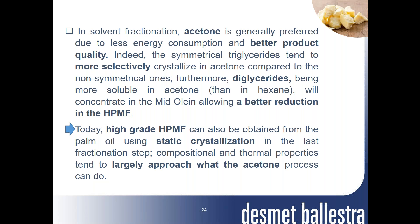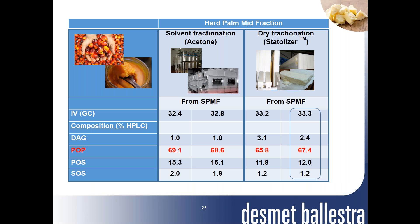In solvent fractionation, acetone is generally preferred due to lower energy consumption and better product quality. The symmetrical triglycerides tend to more selectively crystallize in acetone compared to non-symmetrical ones, and glycerides being more soluble in acetone will concentrate in the mid-olein, allowing a better reduction in the hard palm mid fraction. However, today high-grade hard palm mid fraction can also be obtained using static crystallization in the last step. A hard palm mid fraction having a POP content largely above 65%, even 67%, and an iodine value around 33 can be produced using dry static technology.